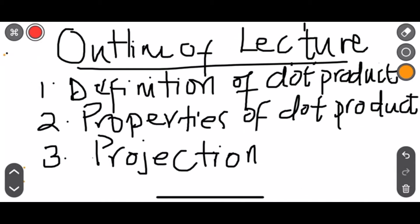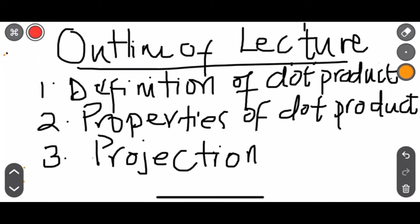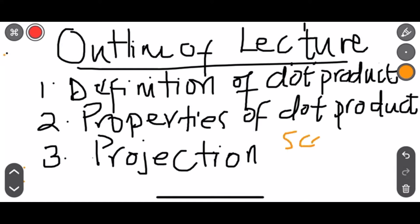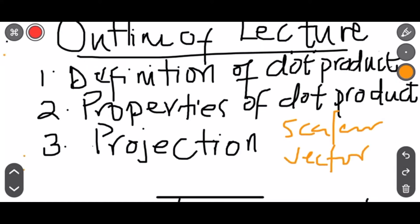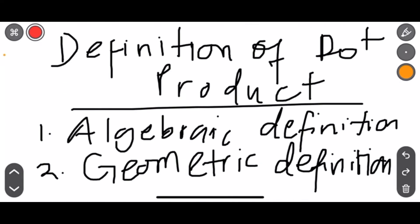So the outline for the lecture: first, the definition of dot product, then we move to properties of dot products. When we talk about projection, that entails the scalar projection and the vector projection. So let's start.